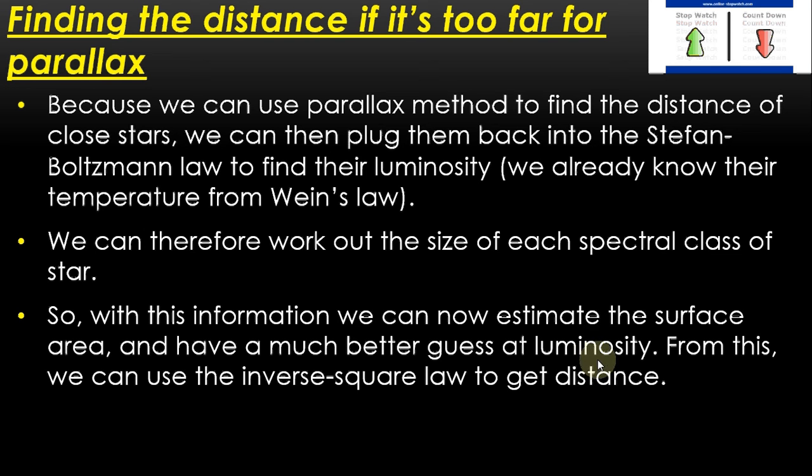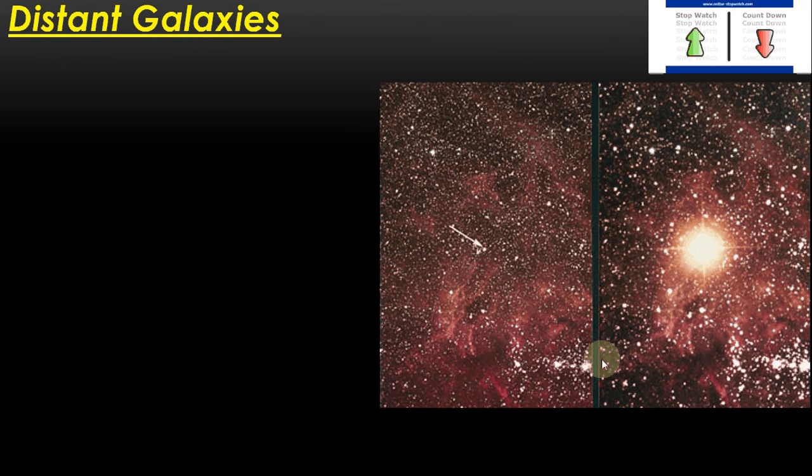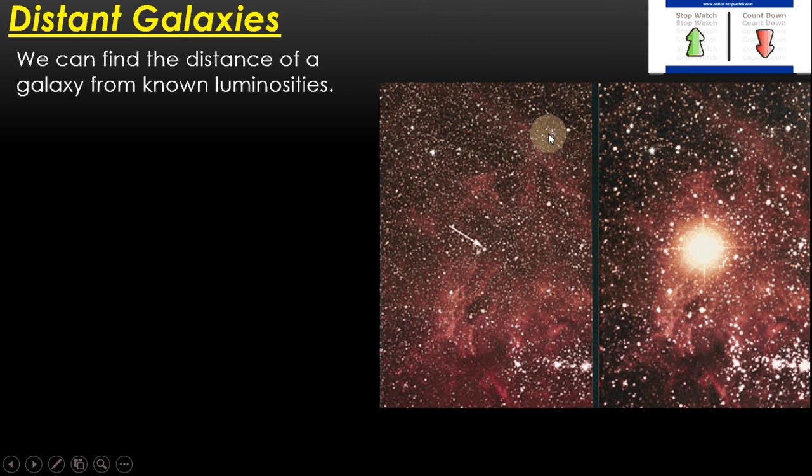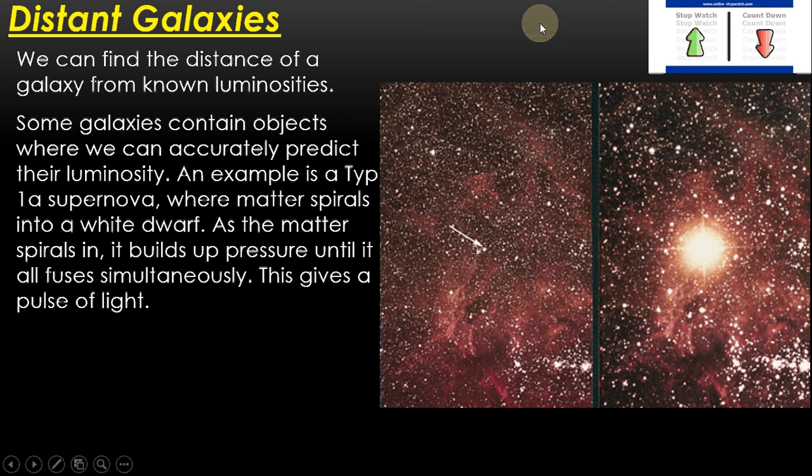But it's not the only method we have of finding the distance of stars. These two pictures are of the same patch of night sky, you can see the nebula around here hasn't changed. This is what a star looked like one night of observation, this is what it looked like the day after. Those of you who are in low will recognize this as a supernova. And supernovas are really important because we can see supernovas in distant galaxies, and they enable us to start thinking about the distance of different galaxies. So some galaxies contain objects where we can really accurately predict the luminosity. And the example you're seeing in this photo here is such a type. This is a type 1a supernova.